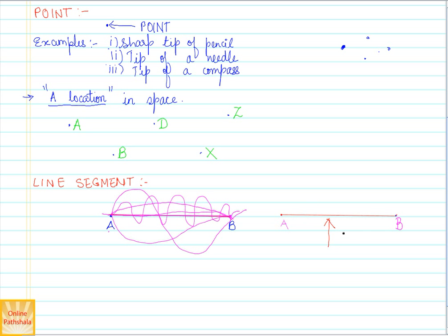This small line which starts from point A and ends at point B is called a line segment. This is an example of a line segment.